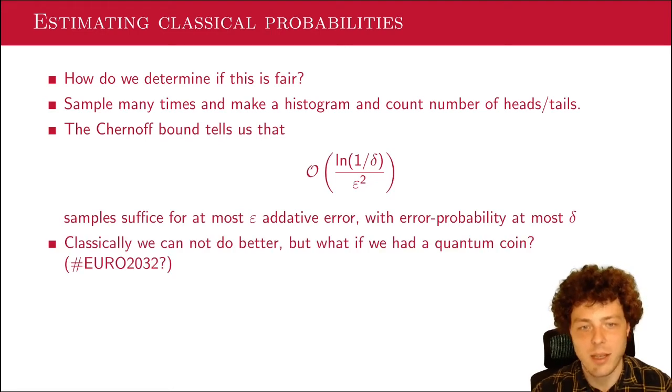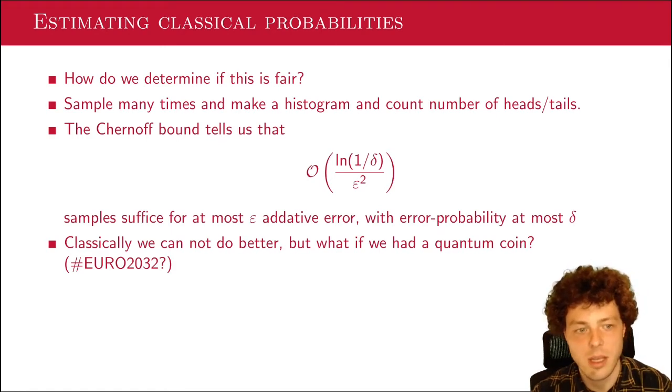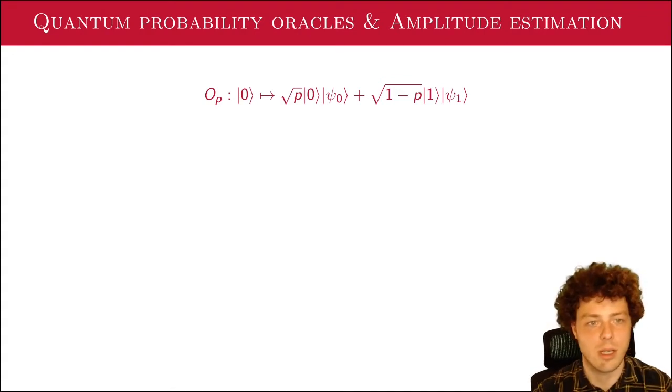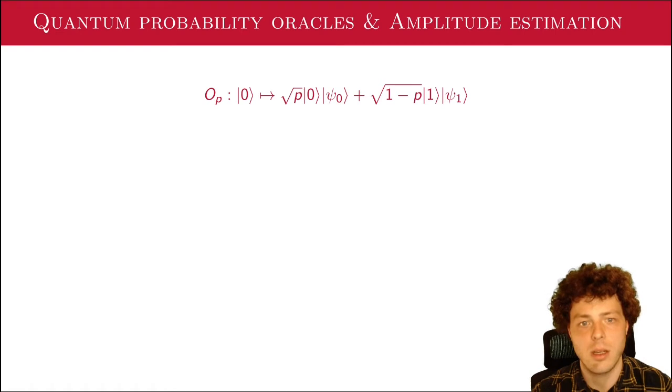Then we'll need approximately 1 over epsilon squared samples, and we'll need log 1 over delta as a factor there to get the probability right. So classically, we cannot do better than this, but maybe if we had a quantum coin, we could actually do better. And I'm just hoping that quantum computers become prevalent enough that by 2032, we'll actually start with a quantum coin for all of these matches. But what can we do if we have a quantum coin instead? Well, let me start by defining what a quantum coin is. So this is some way of sampling from a distribution quantumly. And for a simple distribution with only two outcomes, 0 and 1, this would look a little bit like this.